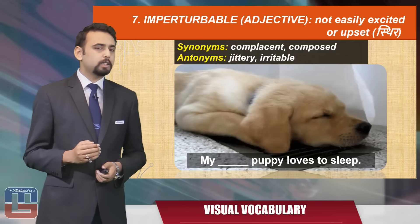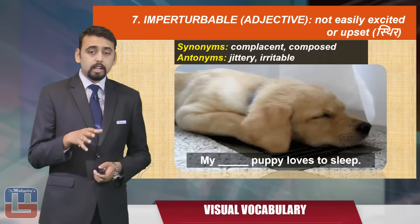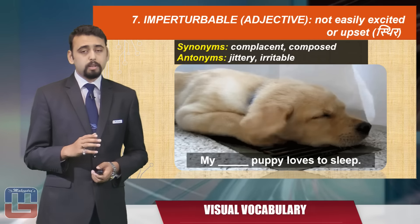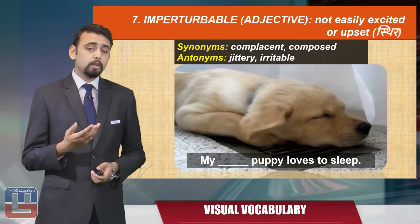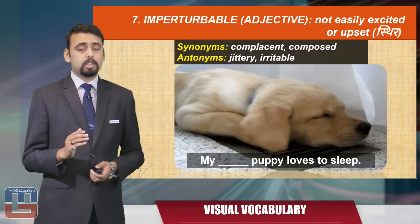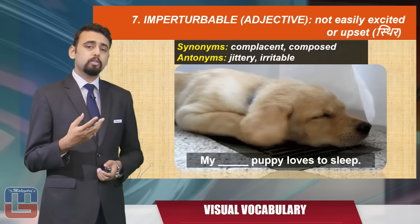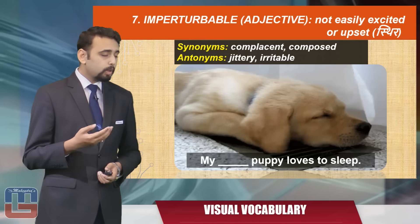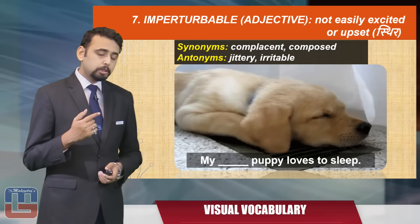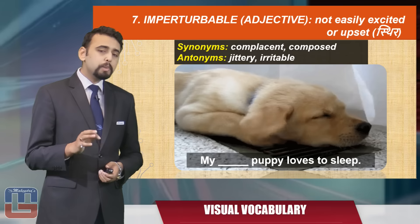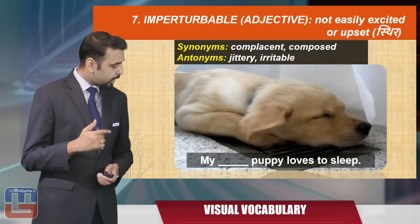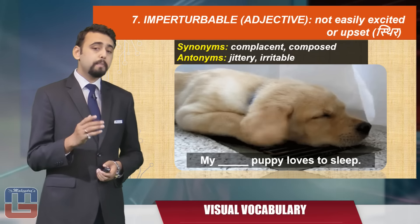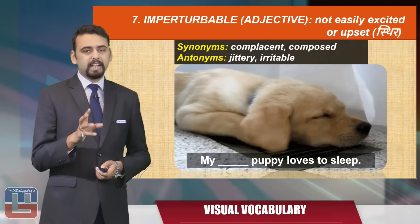The next word is 'impertable,' an adjective meaning not easily excited or upset. The synonyms are 'complacent' or 'composed,' and the antonyms are 'jittery' or 'irritable.' Here's an image of a puppy. The sentence becomes: 'My impertable puppy loves to sleep.'